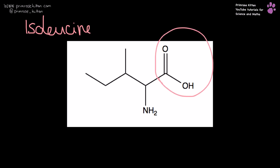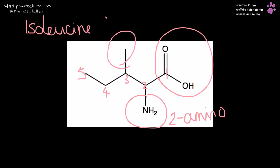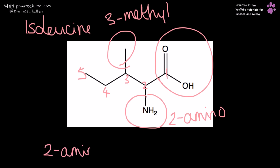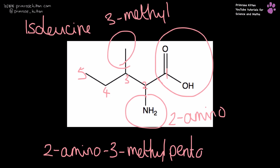Isoleucine. Here we have our carboxylic acid group. Carbons go one, two, three, four, five. We have a 2-amino, we have a 3-methyl. So that is 2-amino-3-methylpentanoic acid.